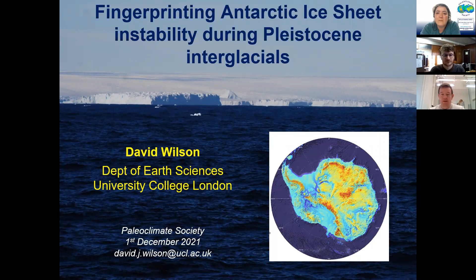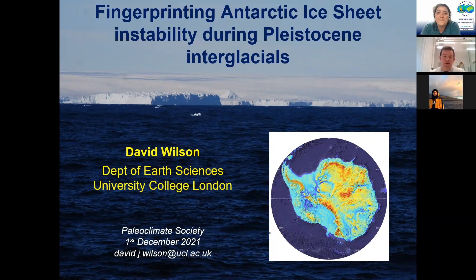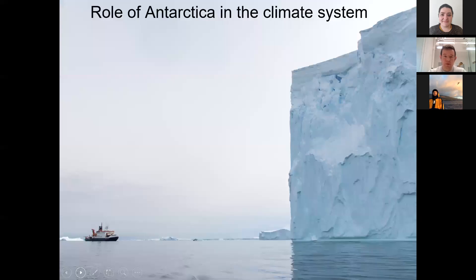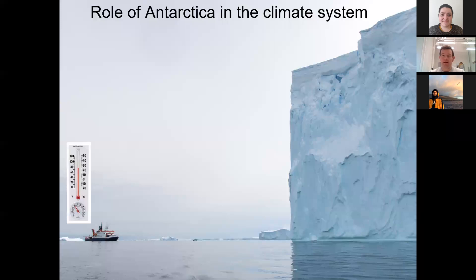This is just an image of the margin of the Antarctic ice sheet. What I want to talk about really, just to set the scene, is to think about the role of Antarctica in the climate system. This is the margin — showing a cliff at the edge of the Antarctic ice sheet with a research vessel running up close to it — and this gives you a sense for the scale of the system we're dealing with.